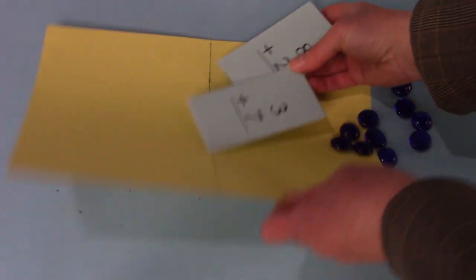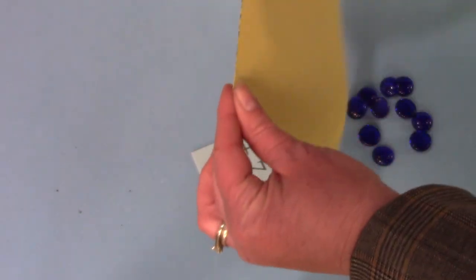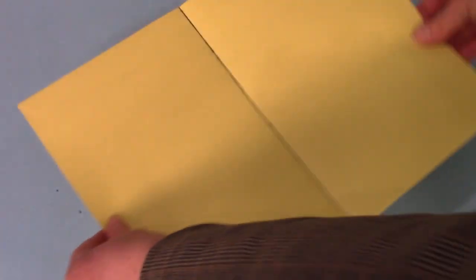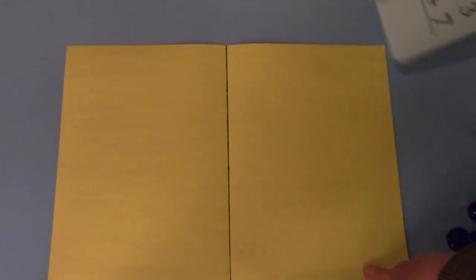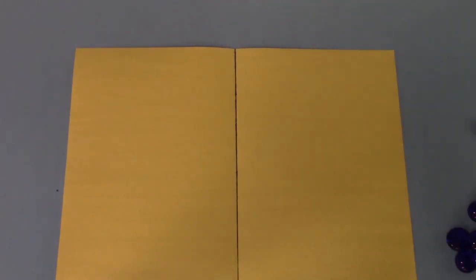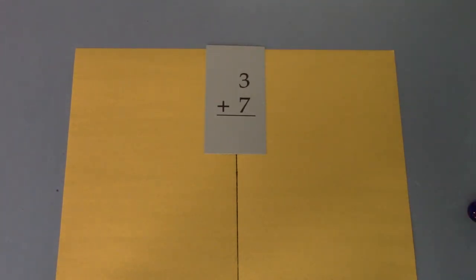What I suggest you do is fold your paper in half and take a marker and make a nice line down the center of your paper. And then we are going to use this to understand our math facts. The first one I want for us to understand is three plus seven.